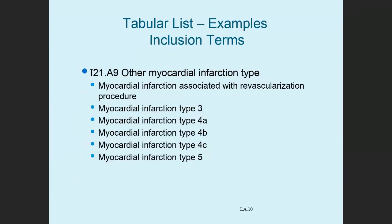Here's an example of inclusion terms. I21.A9, other myocardial infarction type, includes: myocardial infarction associated with revascularization procedure, type 3, type 4A, type 4B, type 4C, and type 5. So types 3, 4, and 5 are all coded in the same category I21.A9 — there are no separate specific codes for these types of infarctions.